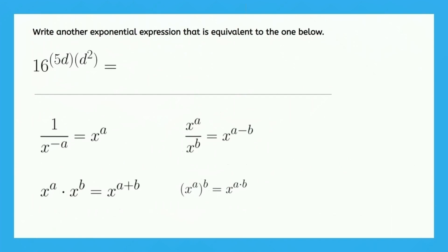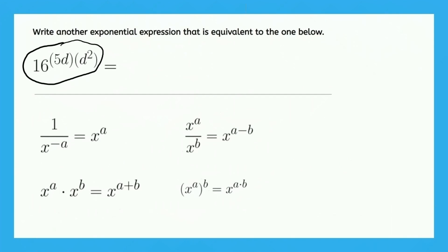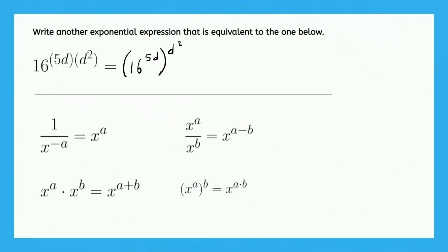Let's try another one. This time, we have a number to the power of a product of two terms. Those two terms are 5d and d squared. So, which of our properties does this one look like? Probably this one on the bottom right. Now let's try to write this expression right here in the form that we have on the left side of the equation in our property. Just like we had a times b right up here, a being 5d and b being d squared, we now have to the power of a and then the entire expression inside the parentheses to the power of b. So, a is now this exponent here and b is this exponent here.